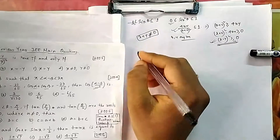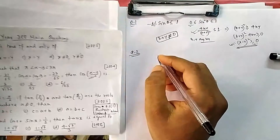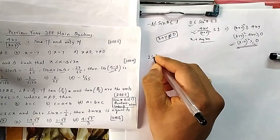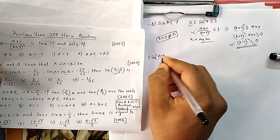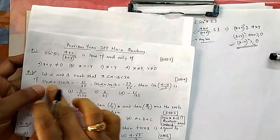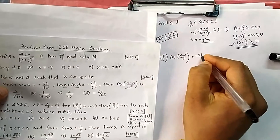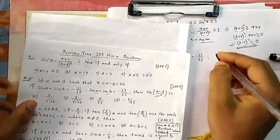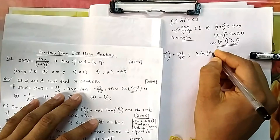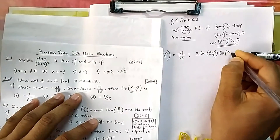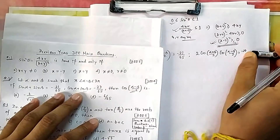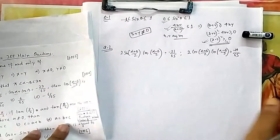Applying sin C + sin D = 2 sin((C+D)/2) cos((C-D)/2), we get 2 sin((α+β)/2) cos((α-β)/2) = -21/65. Similarly, applying cos C + cos D = 2 cos((C+D)/2) cos((C-D)/2), we get 2 cos((α+β)/2) cos((α-β)/2) = -27/65.